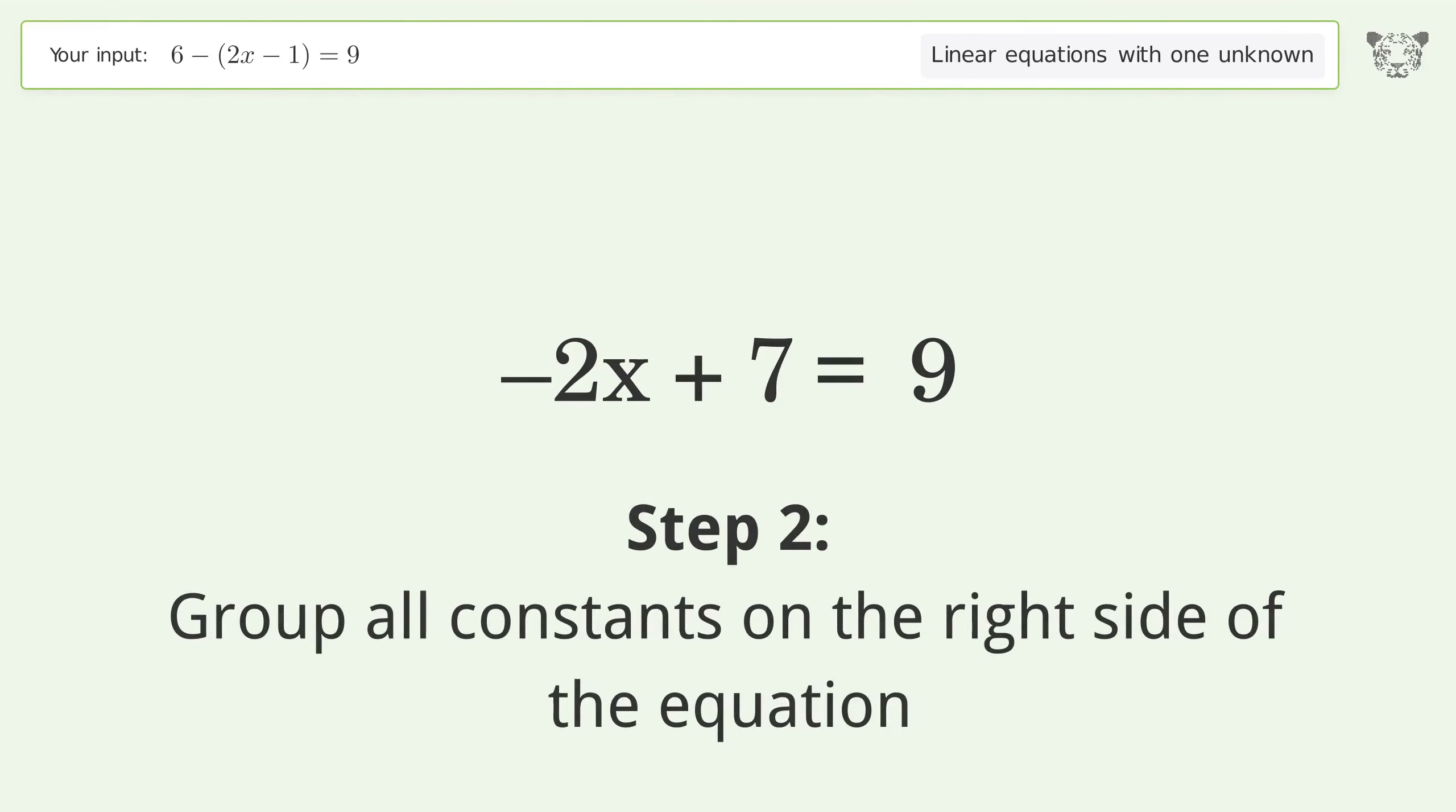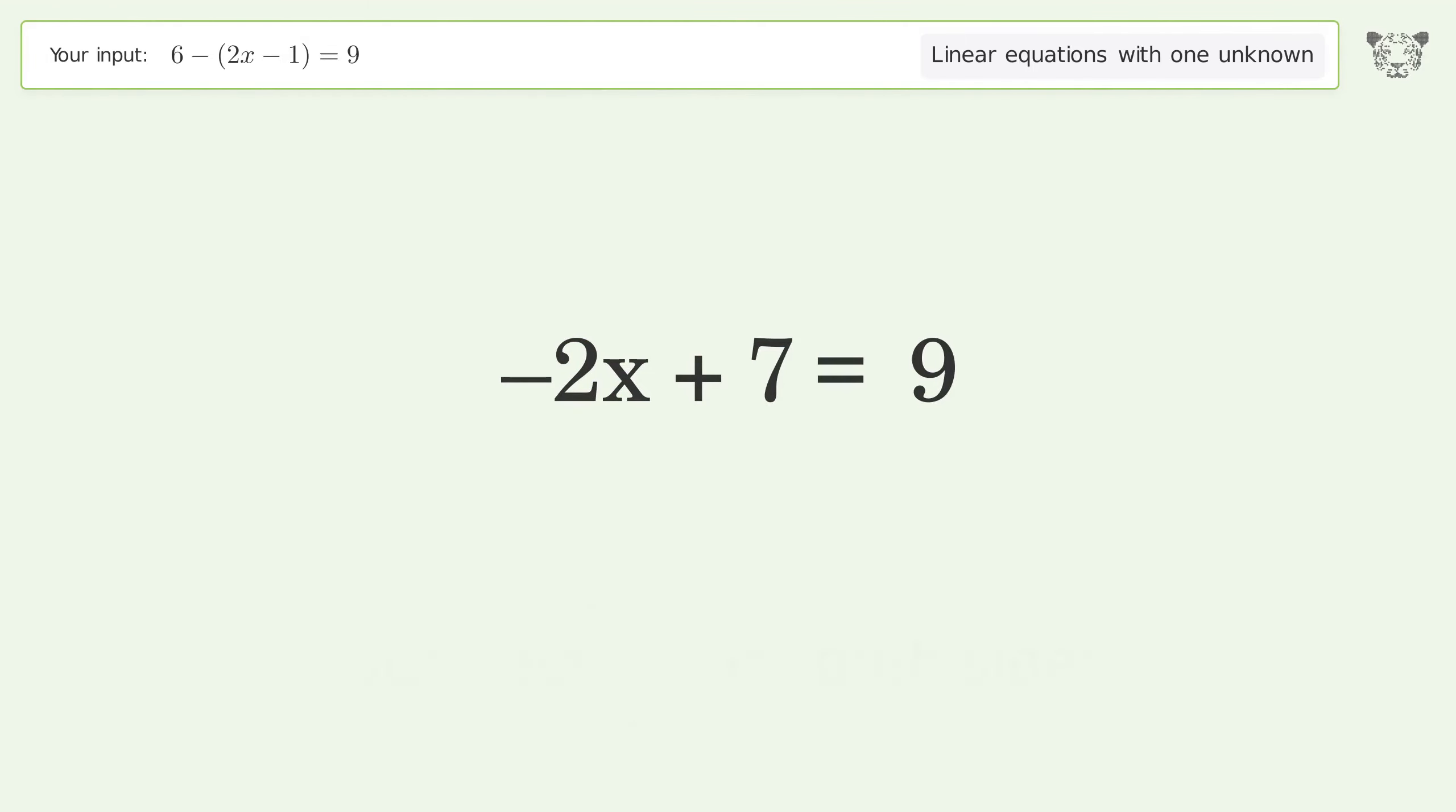Group all constants on the right side of the equation. Subtract 7 from both sides. Simplify the arithmetic.